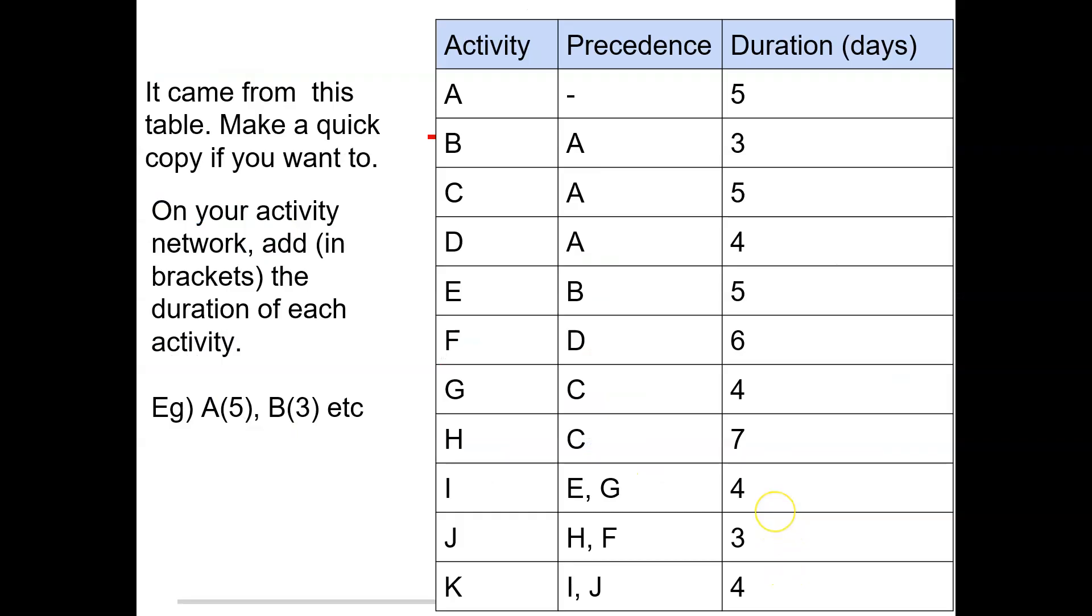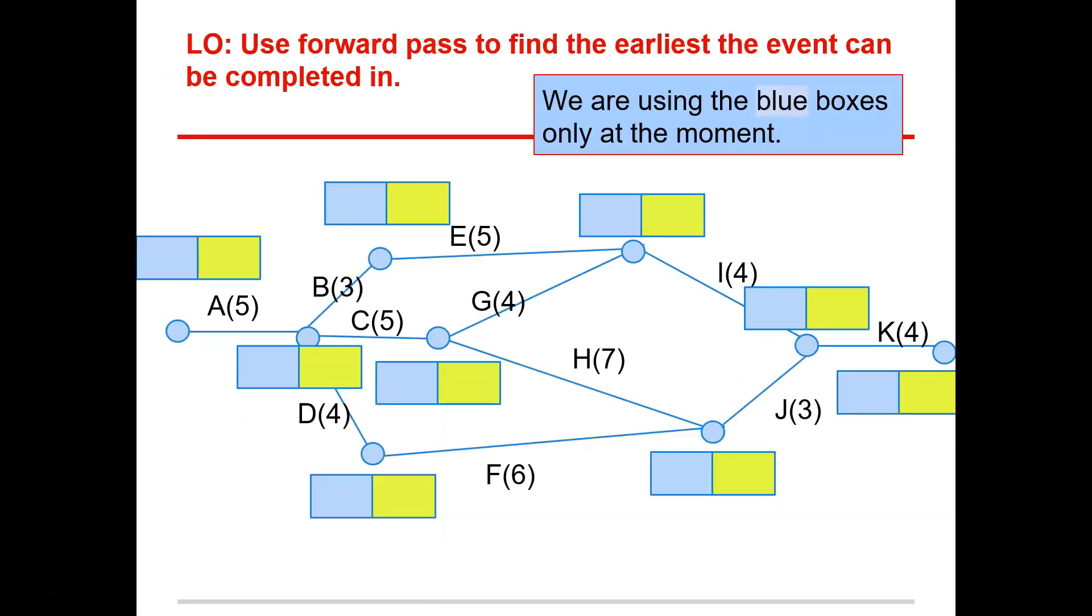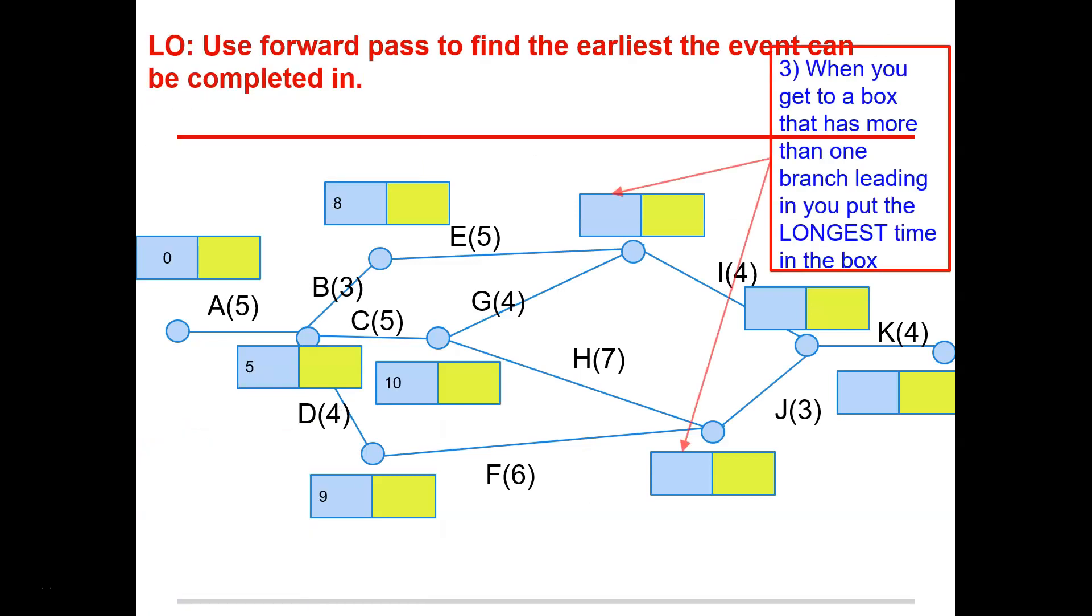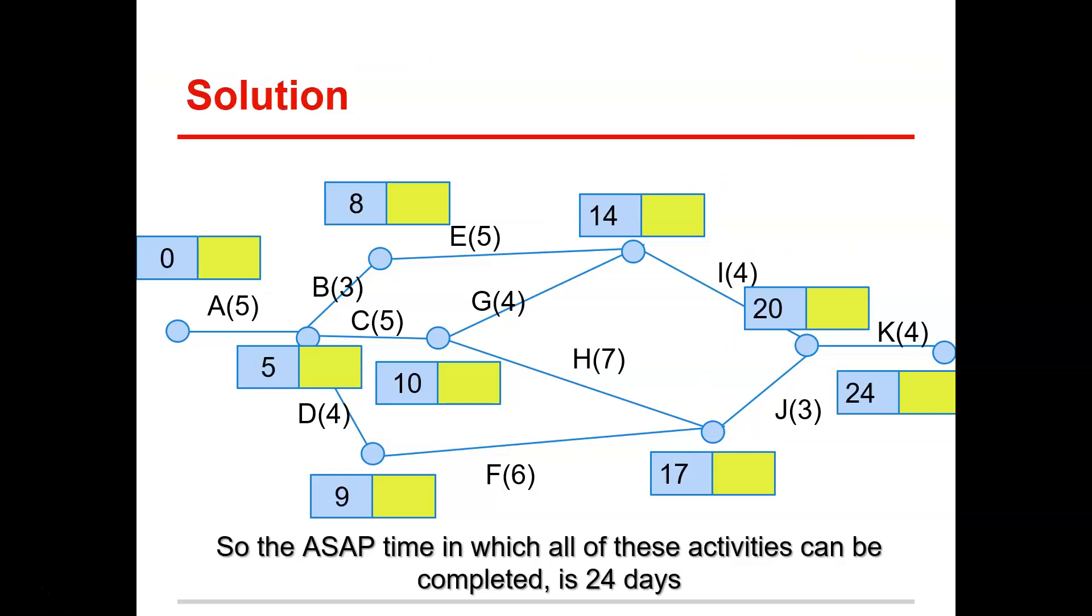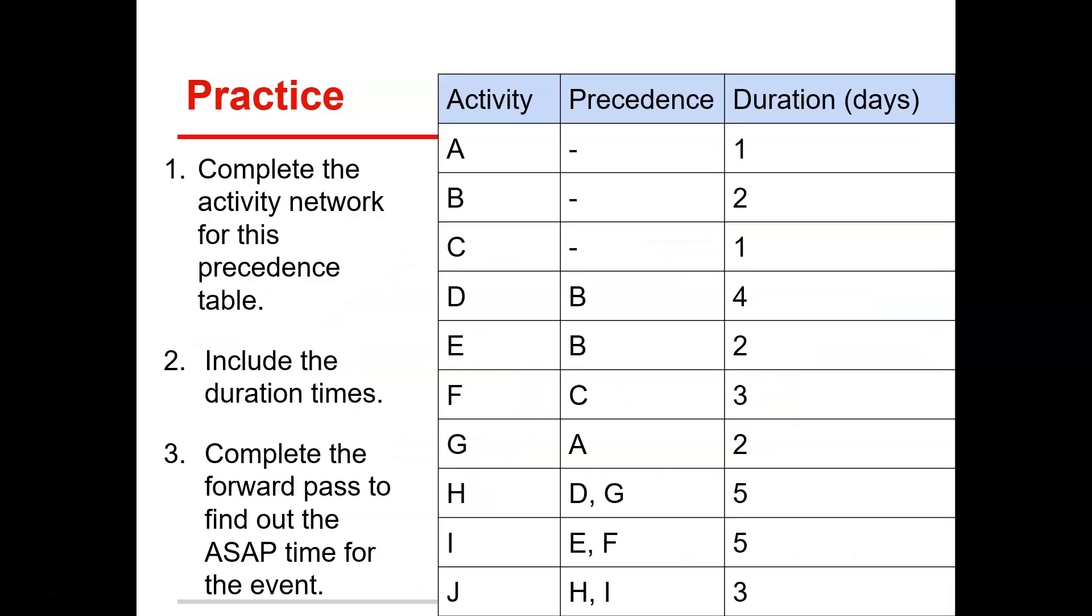But let's have a look at what the answer says. So let's see that we went through and did it correctly. Like I said, when you get to a box that has more than one branch leading to it, you need to put the longest time in the box. I can't stress that enough. It needs to be the longest time. So with that top one, we had 13, 14. So it's 14. With the bottom one, we put 17 in. So the ASAP time in total of this activities can be completed is 24 days. Awesome.